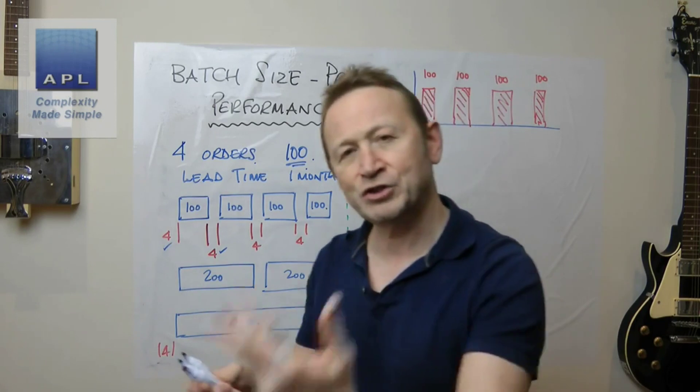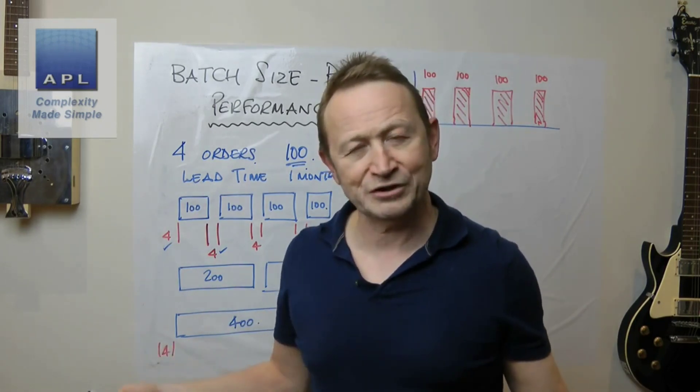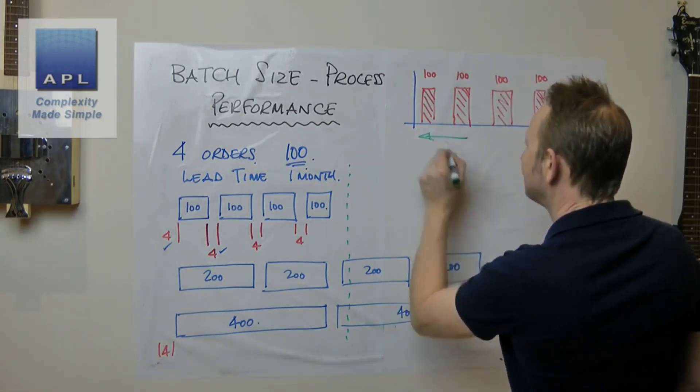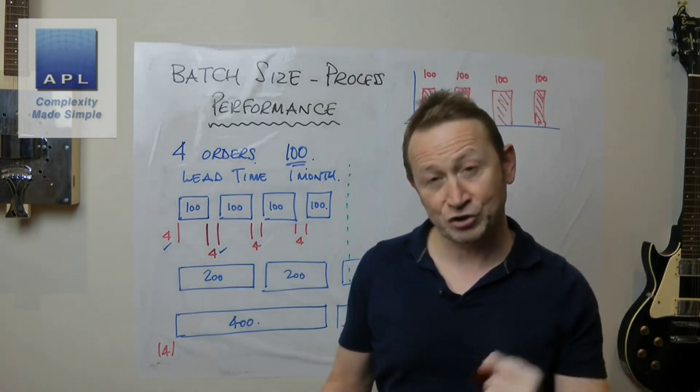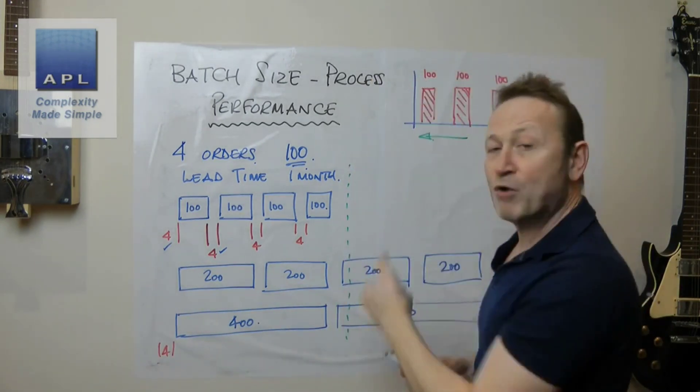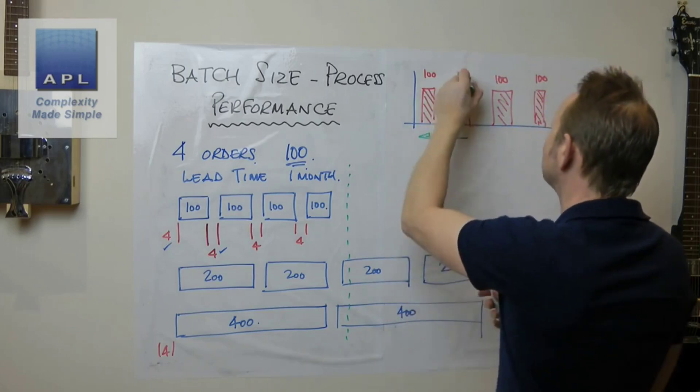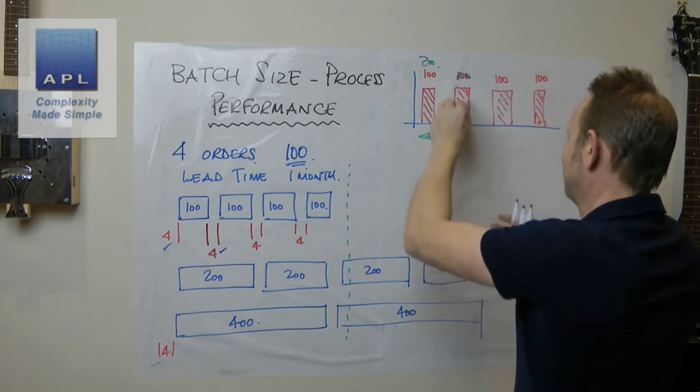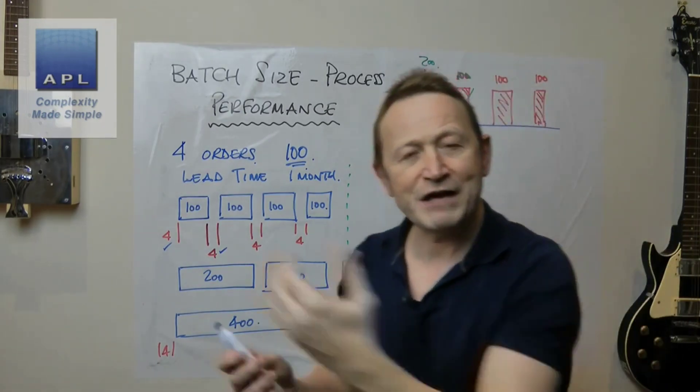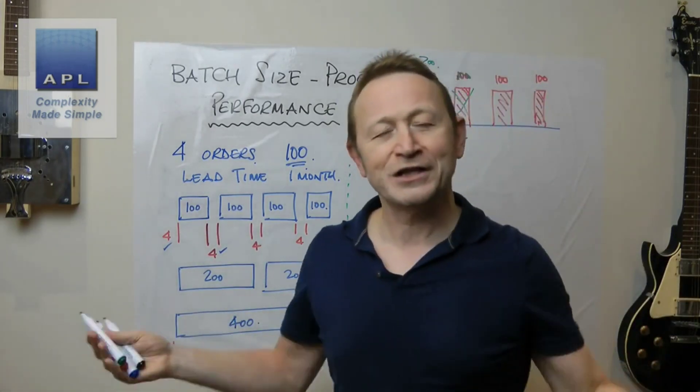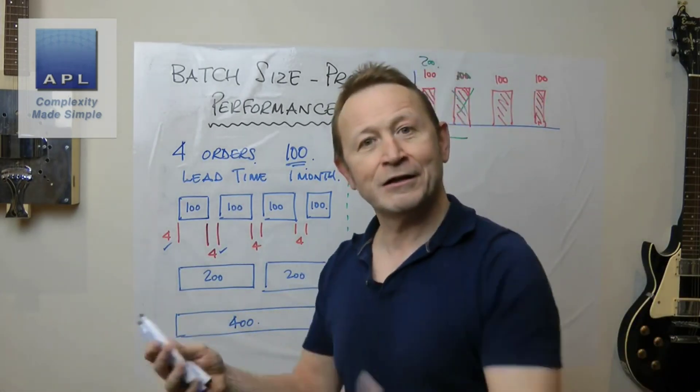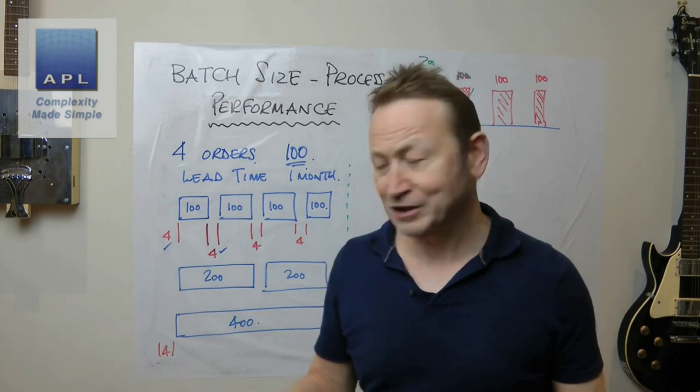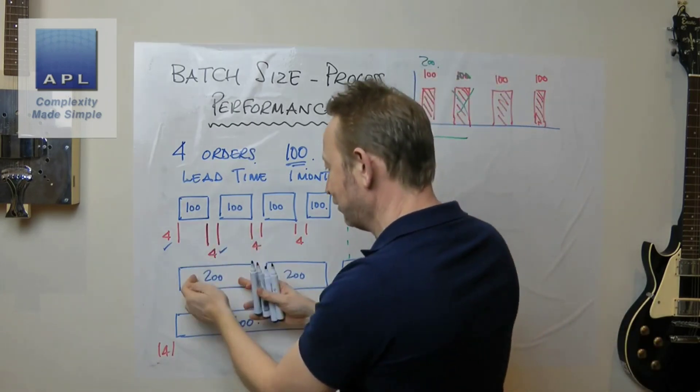So you do a very simple thing and you double the batch size. What does that immediately do? It immediately tells the computer that you've got to bring that order forward. So suddenly you're telling your suppliers, 'I'm awful sorry, we don't want 100 there, what we now want is 200 there, and we don't want this order now.' So they've suddenly got to bring all the material forward that they've been planning. There's a good chance they may not be able to do this.